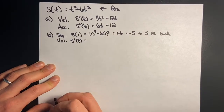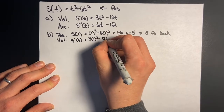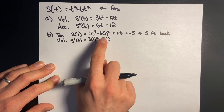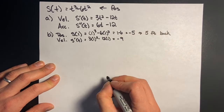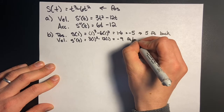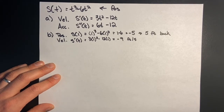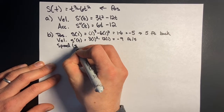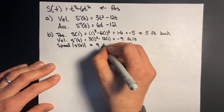For velocity, I plug 1 into the velocity function: 3 times 1 squared minus 12 times 1 equals 3 minus 12, which is negative 9. So I'm going at negative 9 feet per second — moving backwards. Speed is the same thing but with absolute value, so positive 9 feet per second.